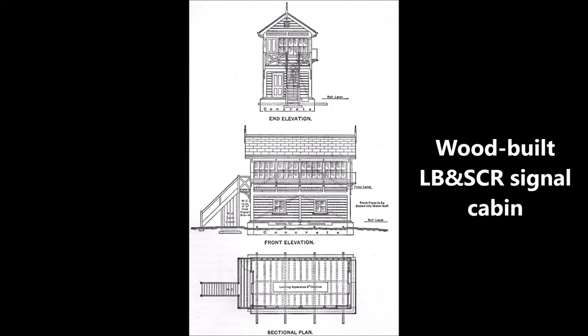One advantage of a wood cabin is that it can be easily moved to a new site without dismantling, but it does not compare with the other types as regards durability or comfort to the signalman. Another type of cabin which can be used when there is not sufficient ground room is one made of wood carried upon an iron bridge across the lines of way, but this is not to be recommended except as a last resource, as there are many difficulties, not the least being that of arranging the lead out for the rods and wires.